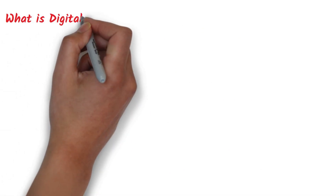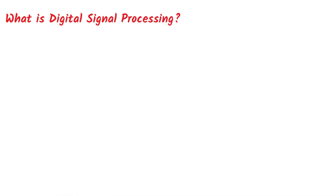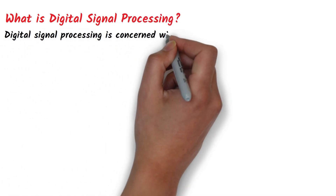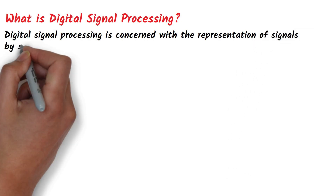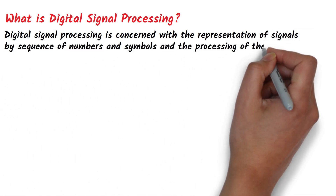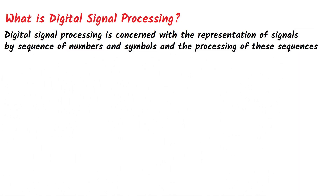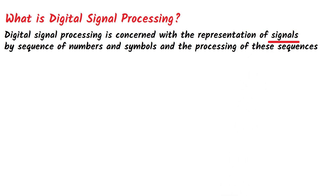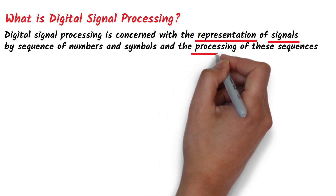What is digital signal processing? Digital signal processing is concerned with the representation of signals by a sequence of numbers or symbols and the processing of these sequences. There are three main points in this sentence: signals, representation of signals, and processing of these signals.